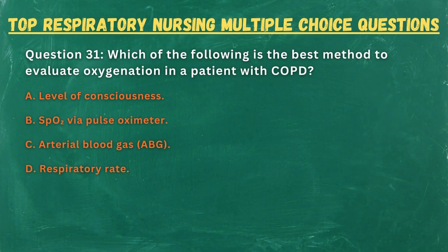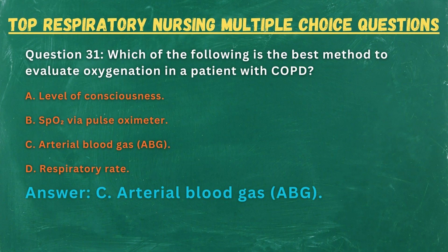Question 31. Which of the following is the best method to evaluate oxygenation in a patient with COPD? A. Level of consciousness. B. SpO2 via pulse oximeter. C. Arterial blood gas (ABG). D. Respiratory rate. Answer: C. Arterial blood gas (ABG).